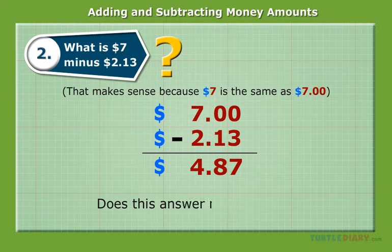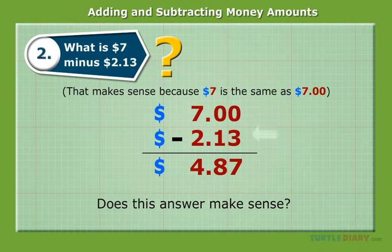Does this answer make sense? Yes, $7 minus around $2 should be around $5, which our answer, $4.87, is very close to.